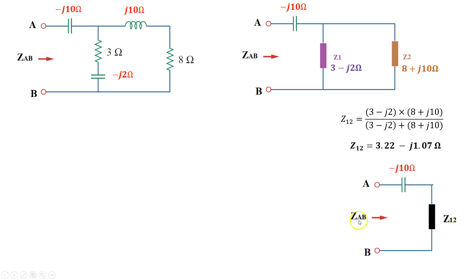Looking from the terminal, I see from terminal A, I see an impedance and another impedance in series with each other. They're going to add.